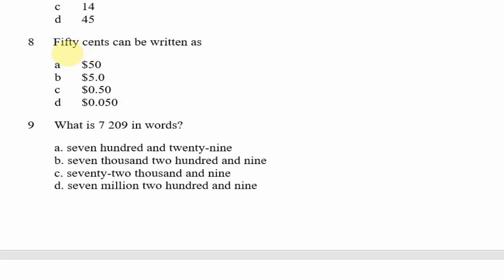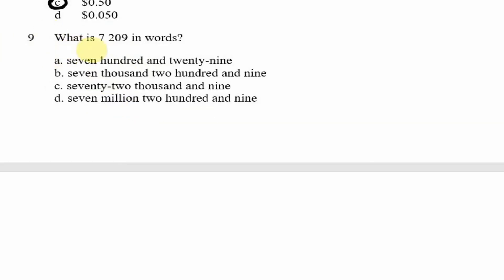Question 8: 50 cents can be written as what? Cents are usually written after the decimal point. The answer is option C, which reads as $0.50 — zero dollars and 50 cents.